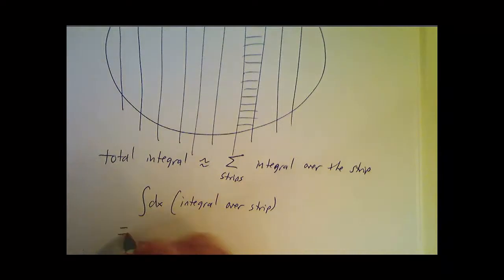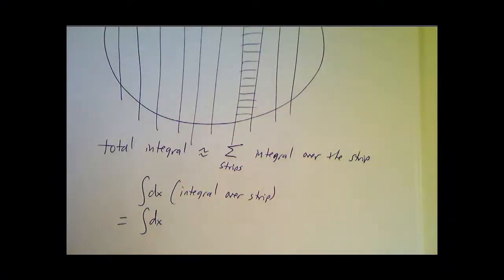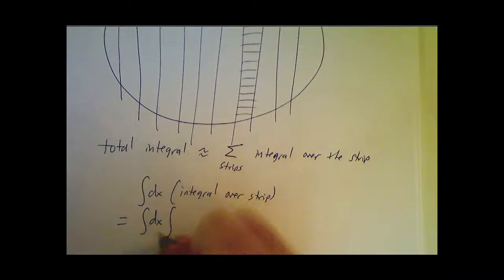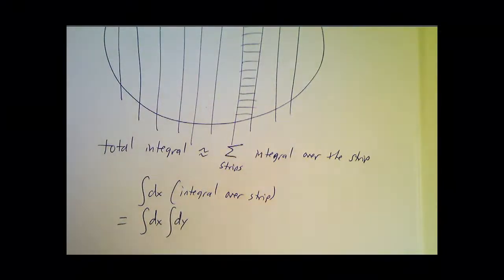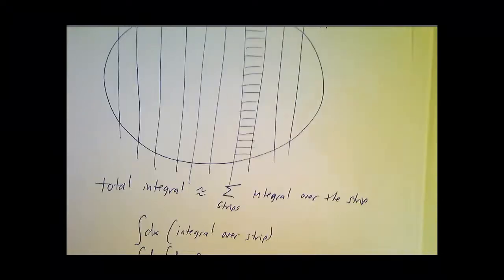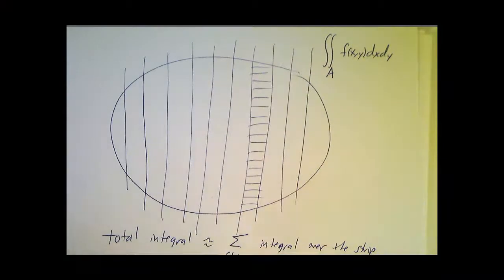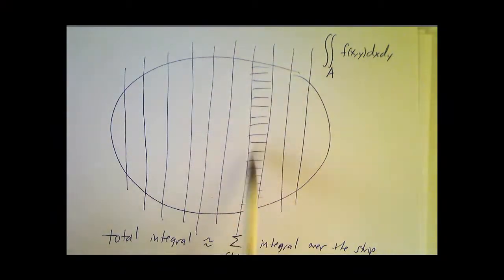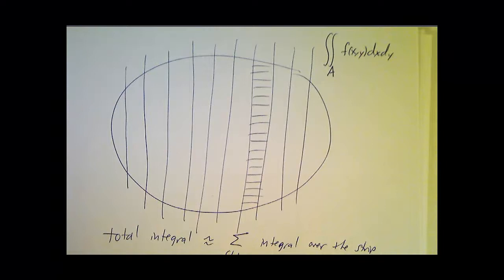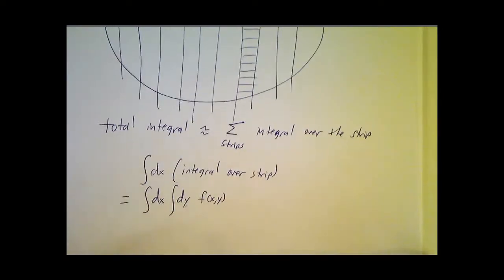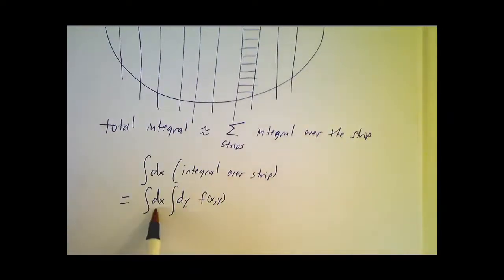So that's going to be the integral over all the strips. And the contribution of each strip is going to be the integral with respect to y of f. So if you want to find out what the total contribution of this whole region is, you chop it up vertically. And then you chop each piece up horizontally. And then you take the appropriate limits. The integral over the whole region is the integral over x of the integral over y of the function.